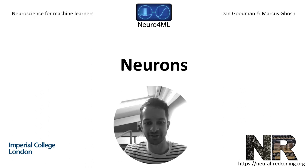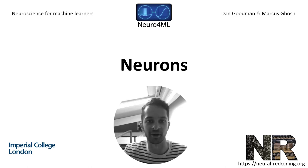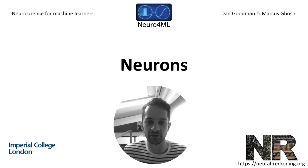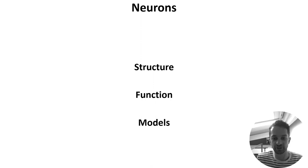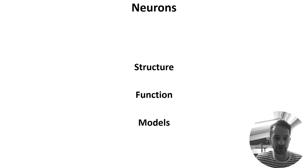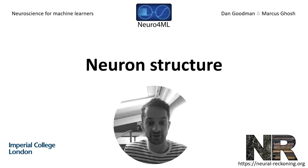Hi, my name is Marcus Ghosh. I'm a postdoc working with Dan, and I'll be giving some of the lectures throughout this course. In this first week, we're going to focus on neurons, which are thought to be the brain's primary processing units. We'll cover three topics: neuron structure, neuron function, and how we can model neurons mathematically and simulate them in code. In this first video, we'll focus on structure.